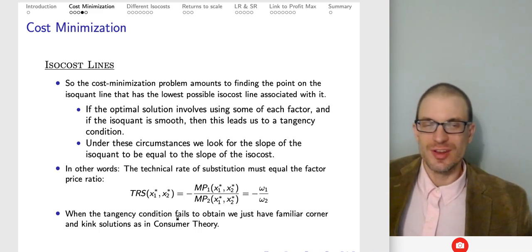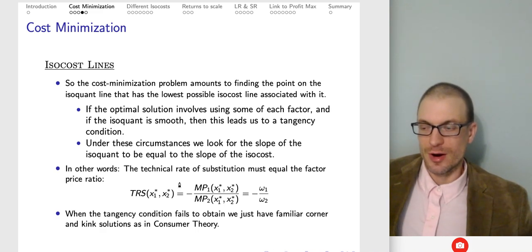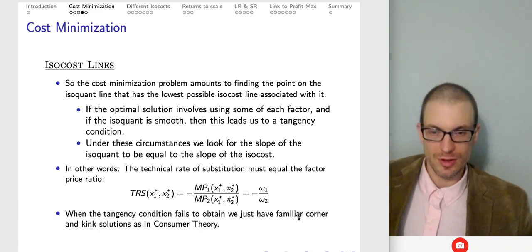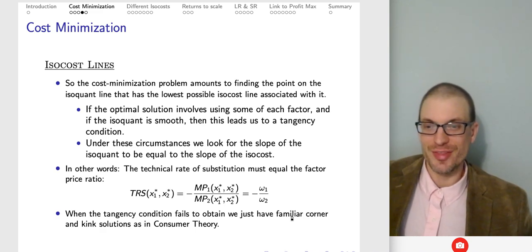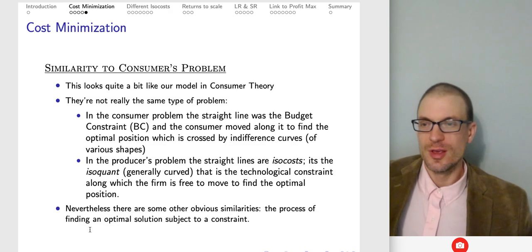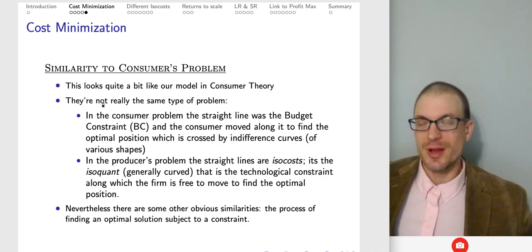This boils down to: the technical rate of substitution — the ratio of marginal products MP₁/MP₂ — equal to the ratio of factor prices ω₁/ω₂. When the tangency condition doesn't hold, a couple of things can happen: right-angle isoquants from fixed proportions (Leontief production technology) where inputs are complements, or perfect substitutes giving corner solutions — using all of one input and none of the other.